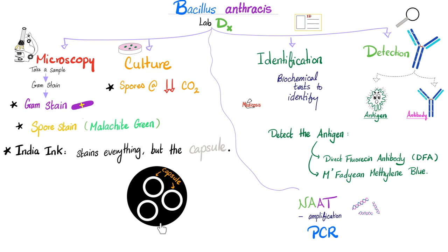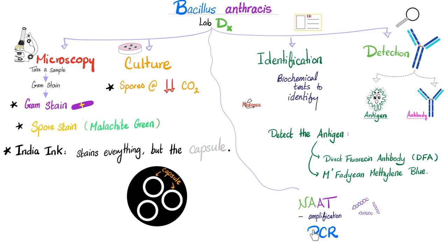Everything else is the india ink. Can we detect the antigen? Yes. The antigen is the polypeptide capsule. How can we detect an antigen? By an antibody — specifically a direct fluorescent antibody, which shines under light. You can also use the McFadyean methylene blue stain. Nucleic acid amplification, like PCR, is used a lot as well.